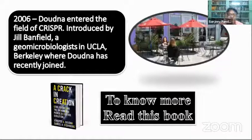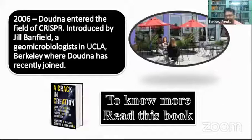Bacteria had saved snippets of phage DNA within their chromosomes so that they could recognize and nullify the same phage if it attacked again — similar to how our immune system memorizes previous infections. It was 2006 when Jennifer Doudna, a prominent and enthusiastic scientist who had been working in RNA interference, got introduced to the CRISPR-Cas9 research area.